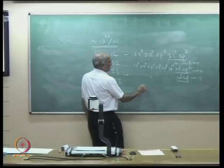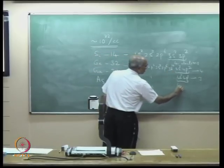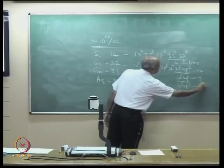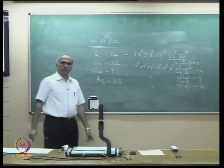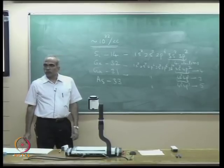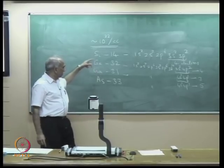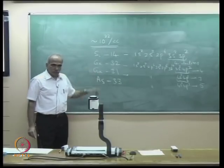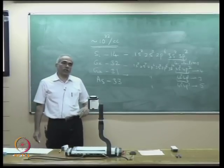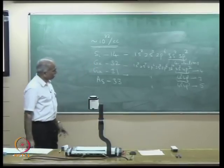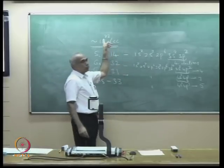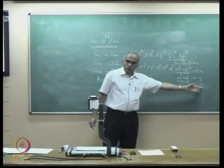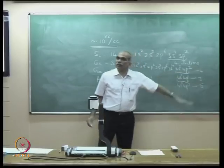Arsenic has the same core configuration with 4s² and 4p³, giving 5 valence electrons. Arsenic is in group 5. Gallium arsenide, which I mentioned yesterday, is a 3-5 compound and a very important semiconductor in optoelectronics.